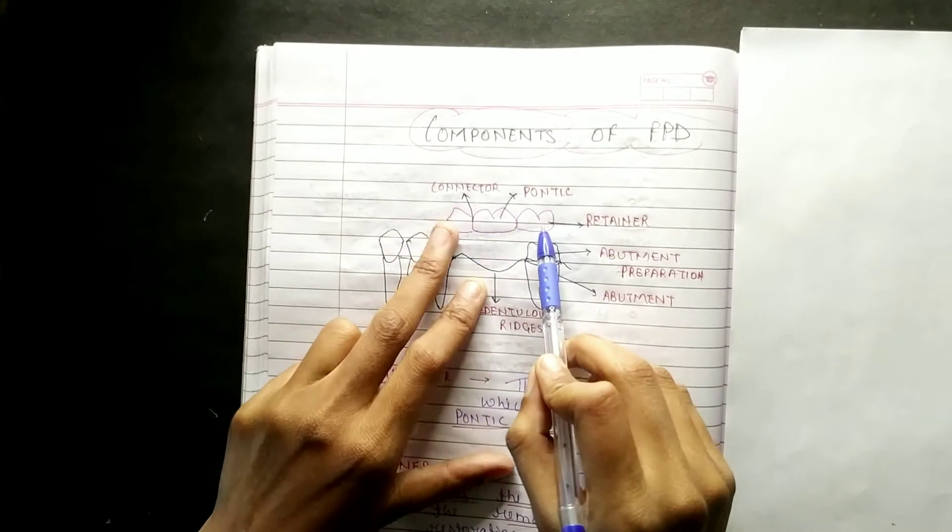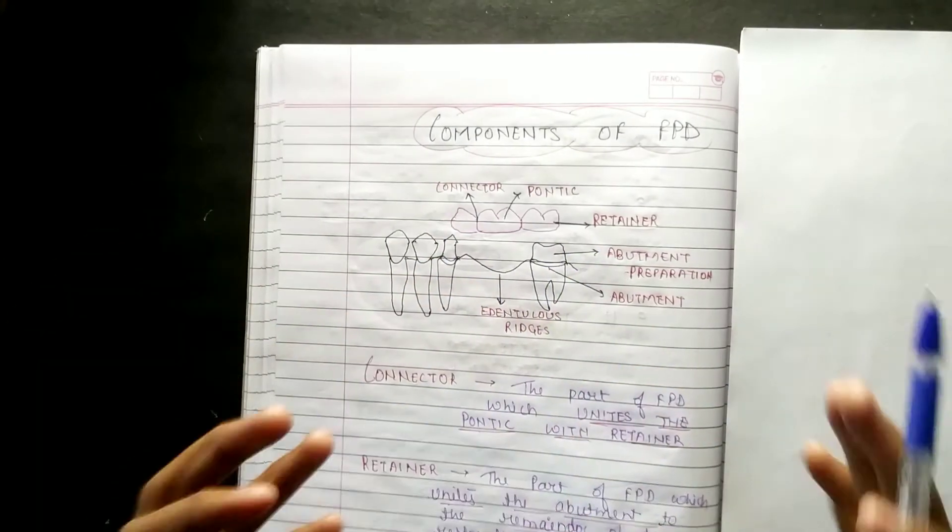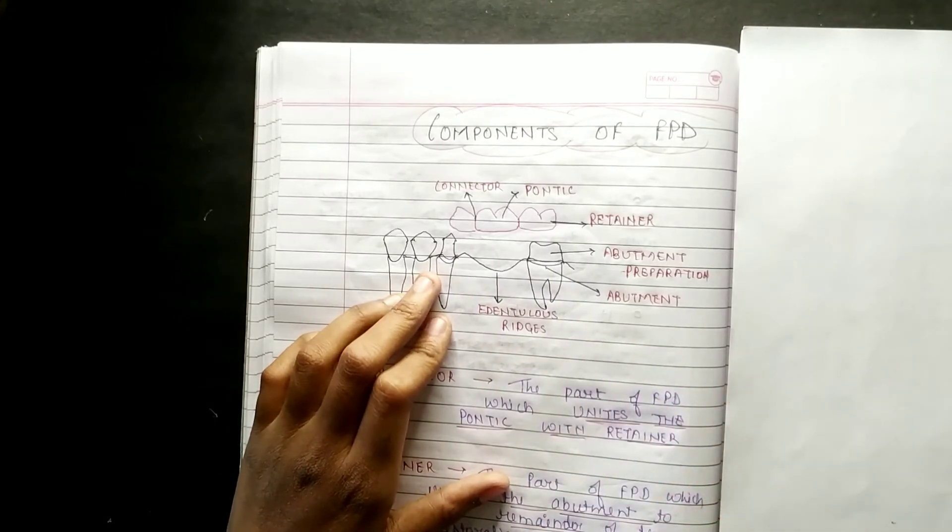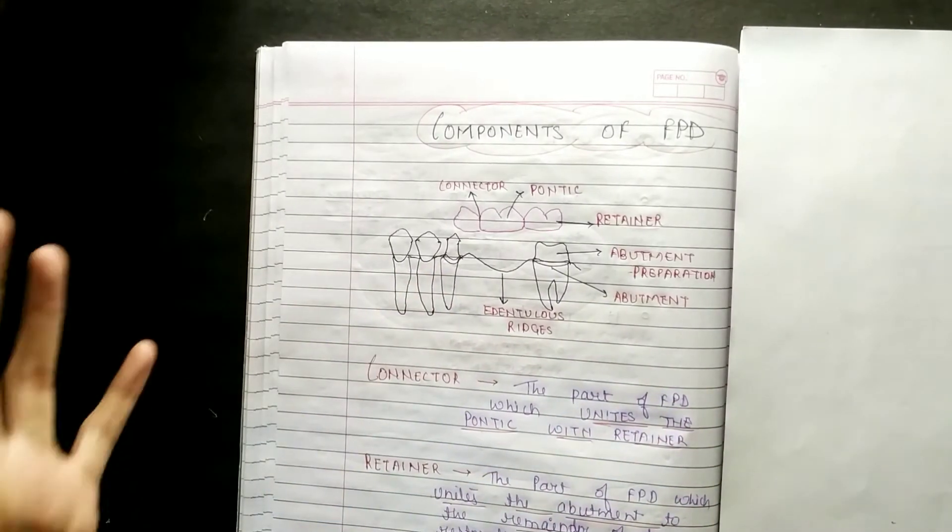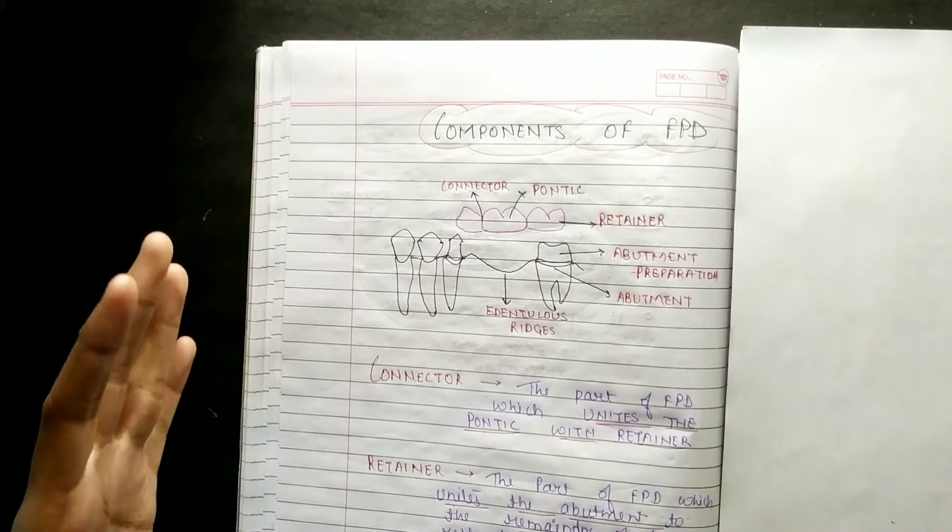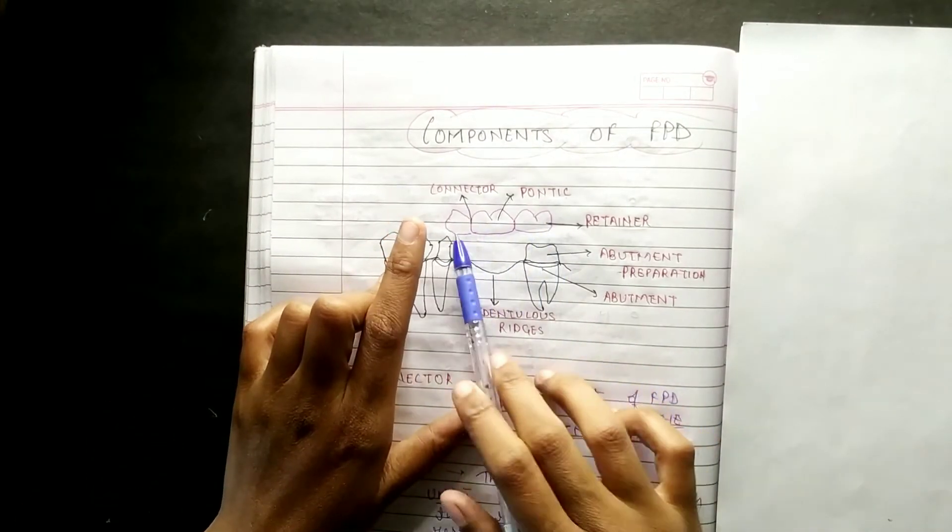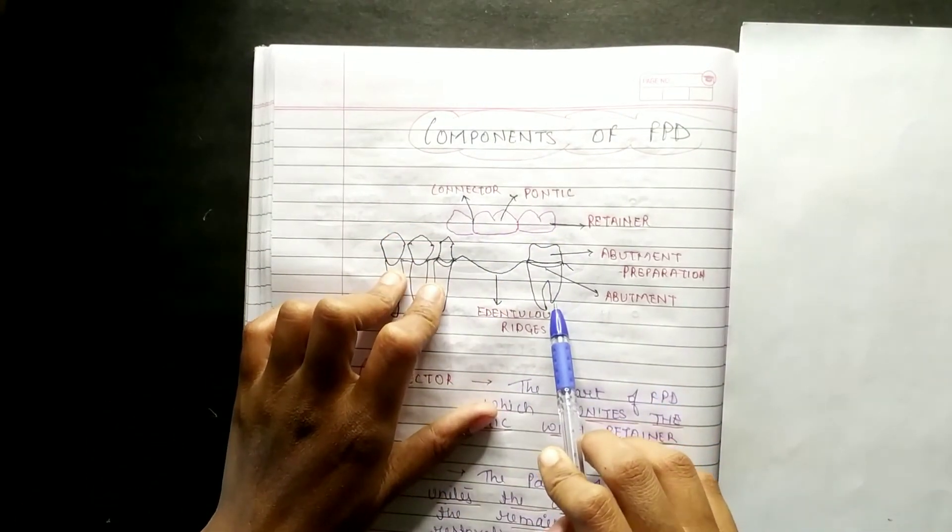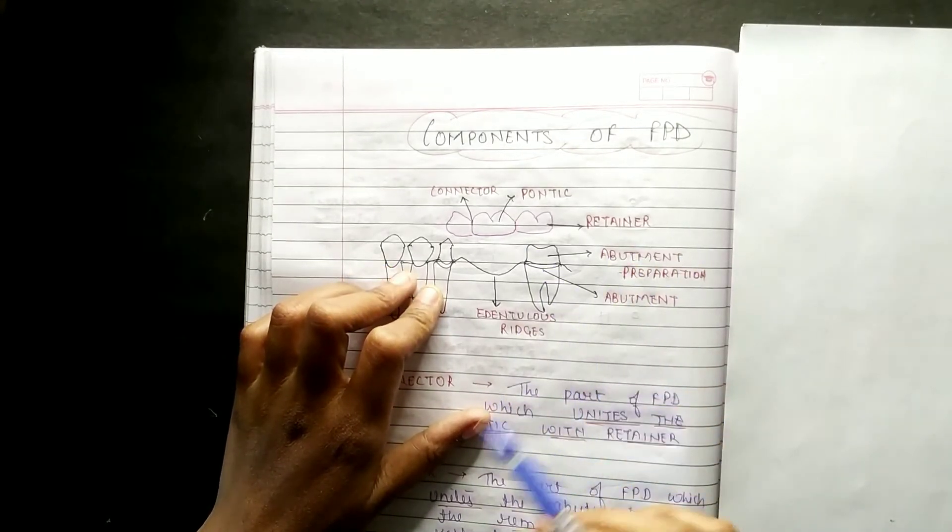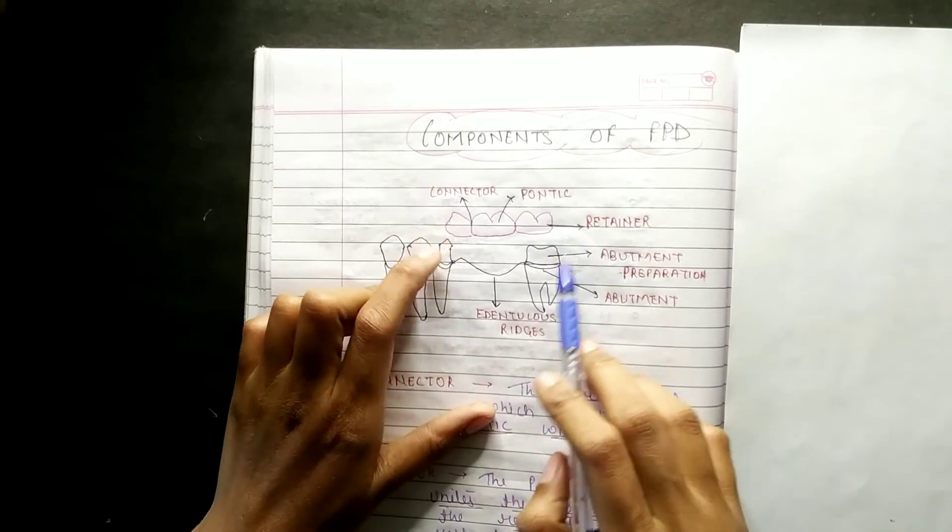These are both retainers which will go to your abutment - this tooth and this tooth. These are the abutments which will support the replacement, that is pontic. These are your abutment retainers.